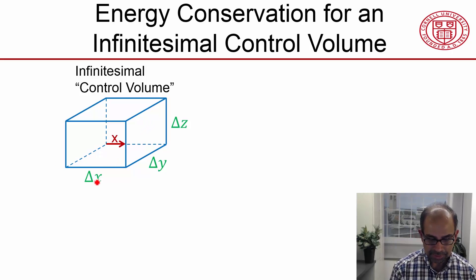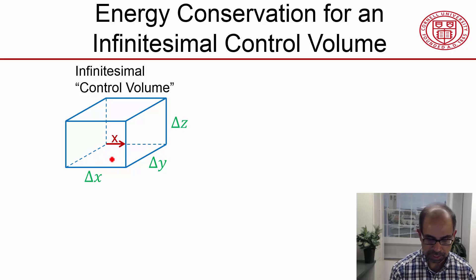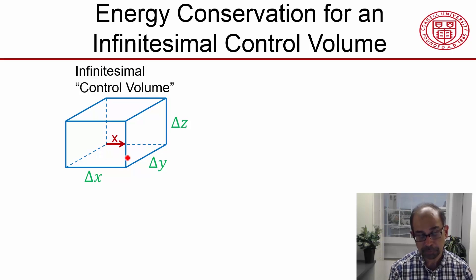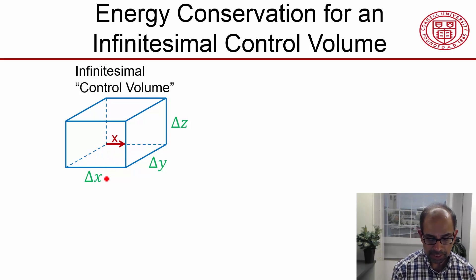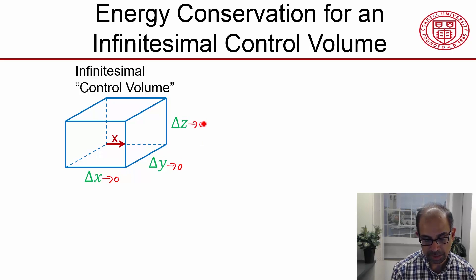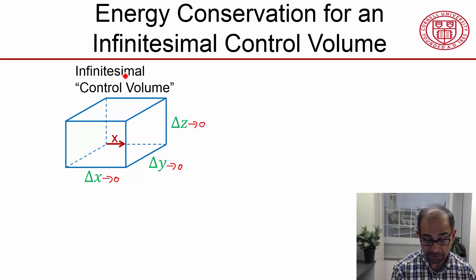The dimensions are delta x, delta y, delta z — this being the x direction, this would be y, and this would be z. I look in the limit as these tend to zero. That's why you say it's an infinitesimally small control volume.